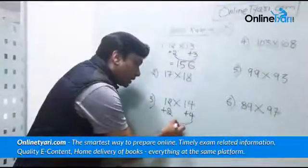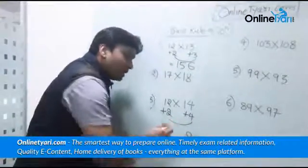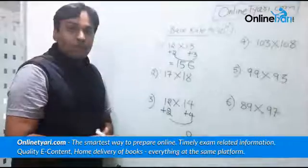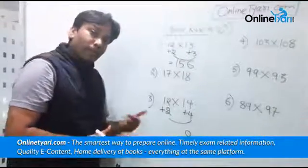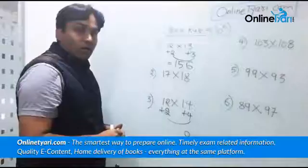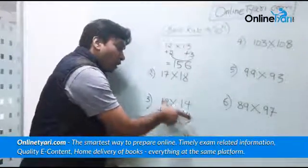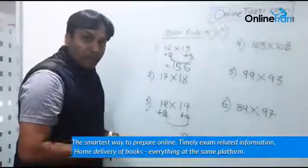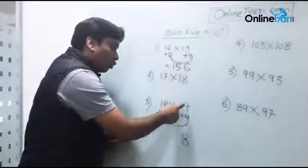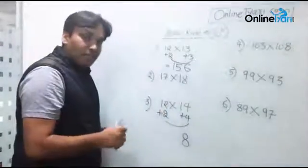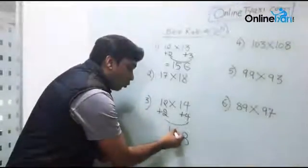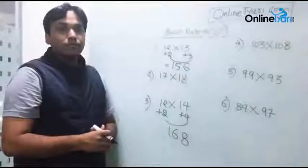When you multiply these two, what is that you're going to get? Which is 2 times 4 is 8. Now do the cross addition. The cross addition is going to give you what? 12 plus 4 comes out as 16, and 4 plus 2 again is 16. So what is this answer? 168. I hope you're understanding the technique out here.